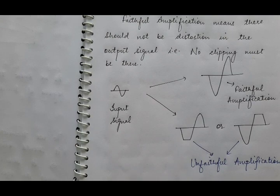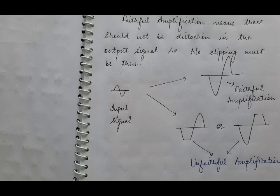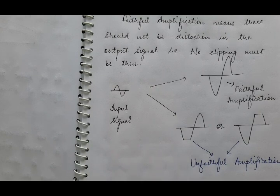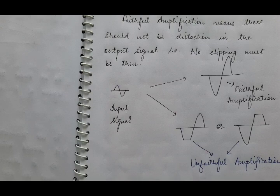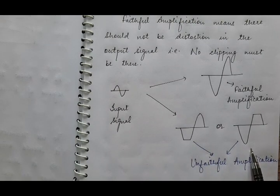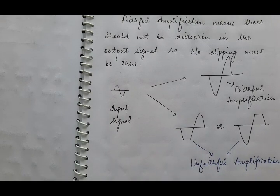So proper operating point is most important when using a transistor as an amplifier. If your operating point is not suitable or not proper, then after amplification your output signal will have unfaithful amplification — you will get a distorted signal. Some part of your output will be removed.